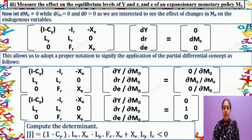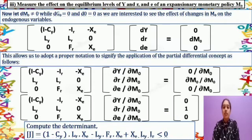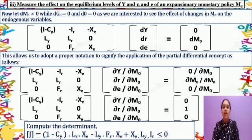After that we compute the determinant. The Jacobian equals 1 minus C subscript Y, times L subscript R, times X subscript E, minus L subscript Y, times F subscript R, times X subscript E, plus X subscript E, times L subscript Y, times L subscript R, which is less than 0.